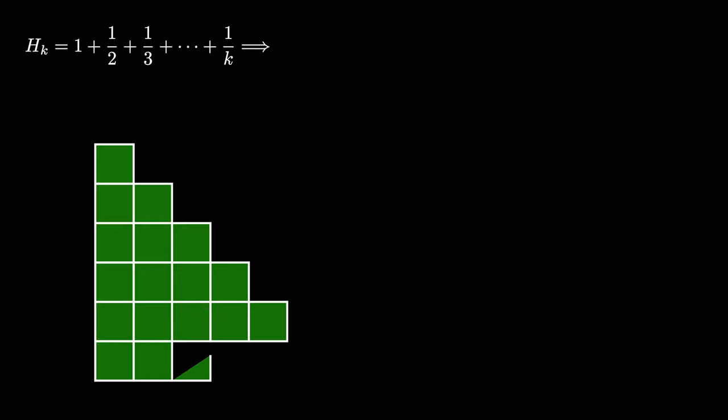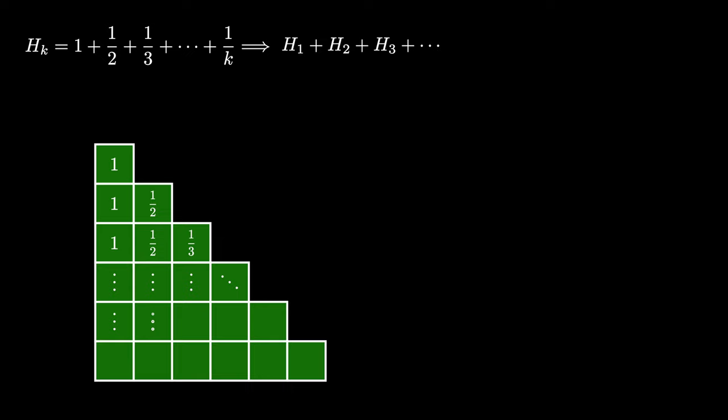Now consider a triangular array with n minus 1 rows. In the first row, place the harmonic sum h1. In the second row, place the harmonic sum h2, and so on, so that the entry in row i and column j is the fraction 1 over j.